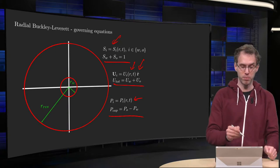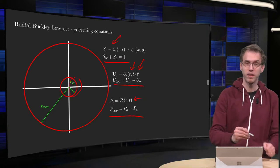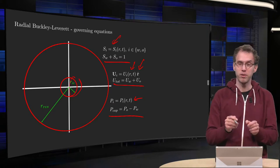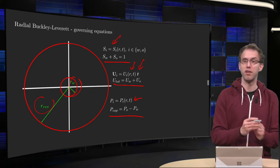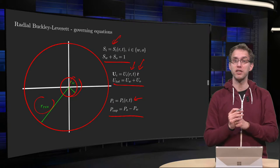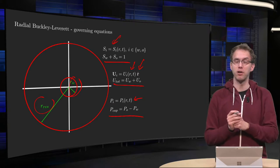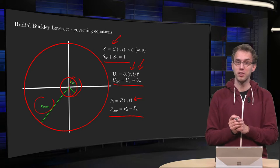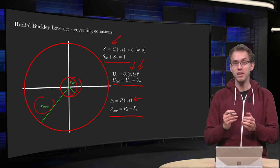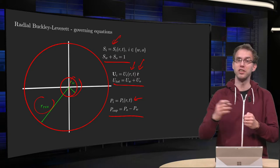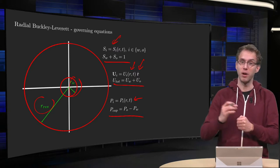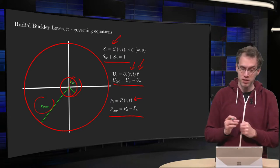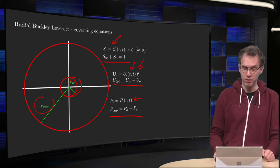We typically think of a well problem with rw as the radius of the well, which is typically, say, 0.1 meter, and our reservoir, the radius of the reservoir, which is typically like a kilometer or something like that. So, the picture is not to scale, of course. And then we are interested in the saturations at a certain distance from the well, we are interested in the velocity fields at a distance from the well, or pressure. So what are then the governing equations?